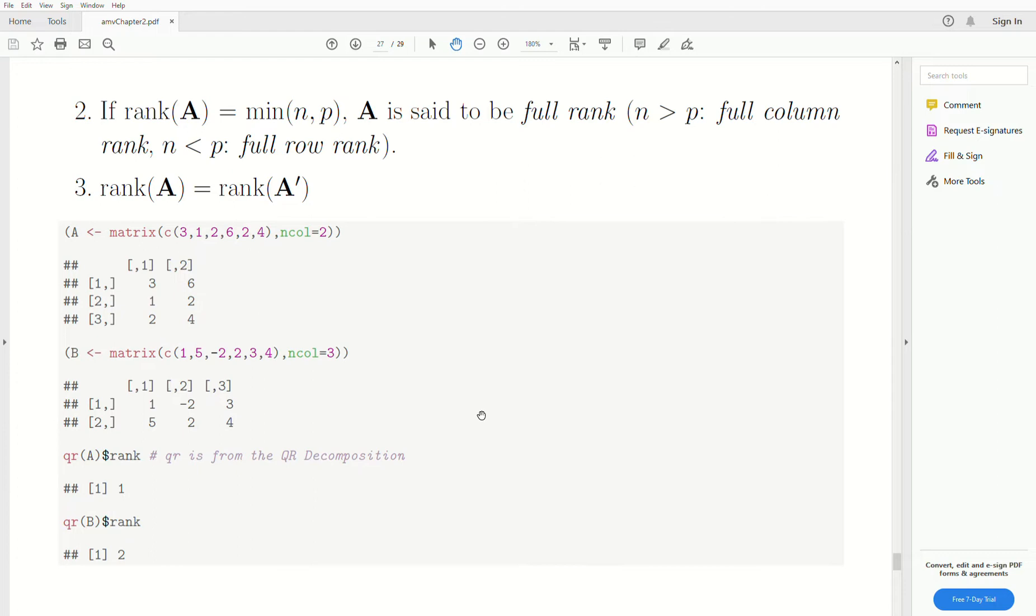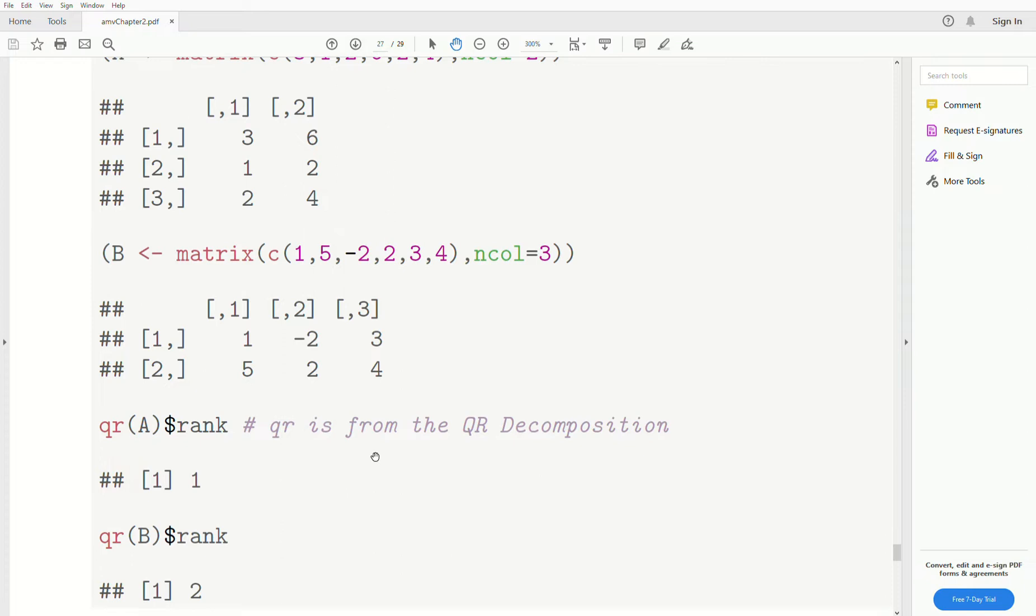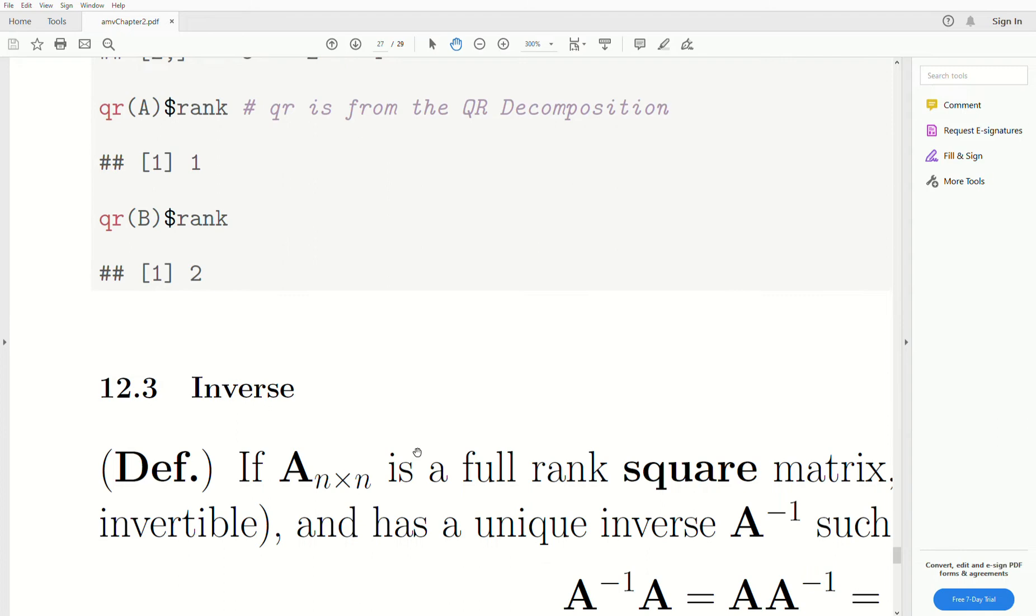And to do this in R, we make use of what's called the QR decomposition, which we won't cover. We have a matrix A and a matrix B, QRA, and then we tell it just output the rank. So the rank of A is one and the rank of B is two.